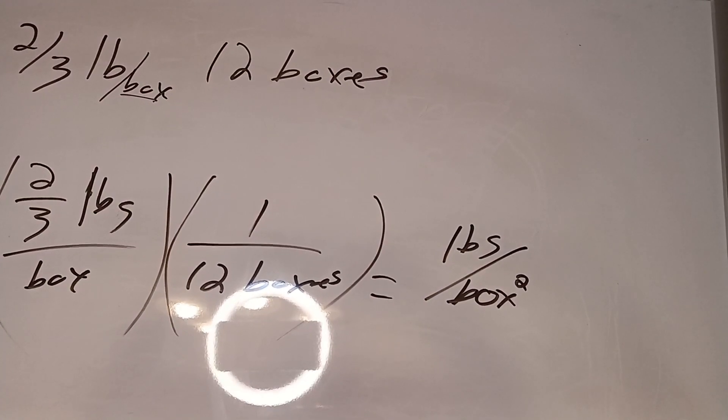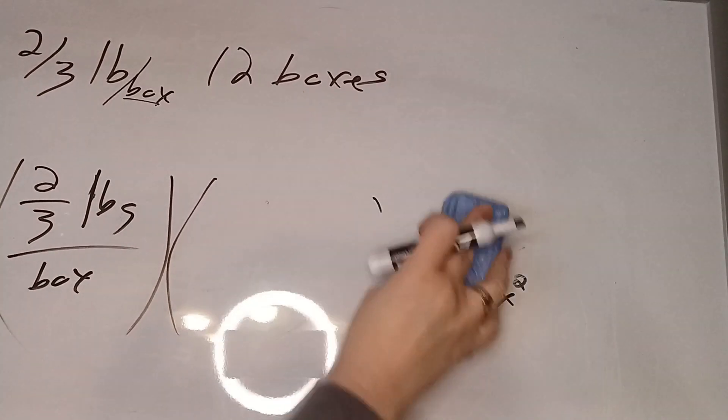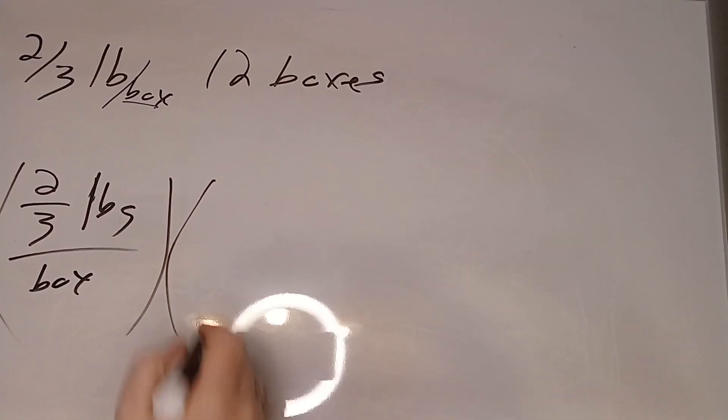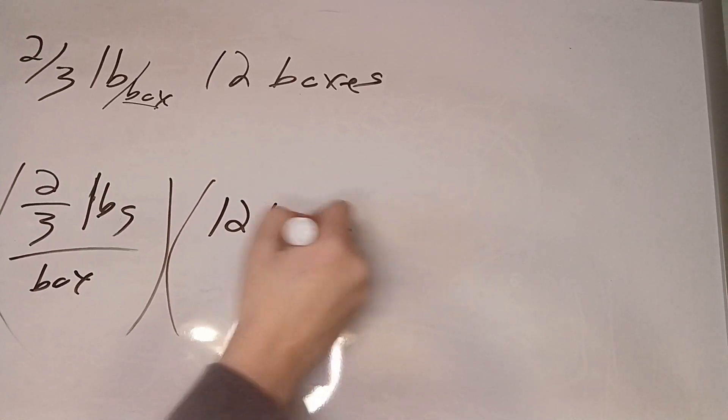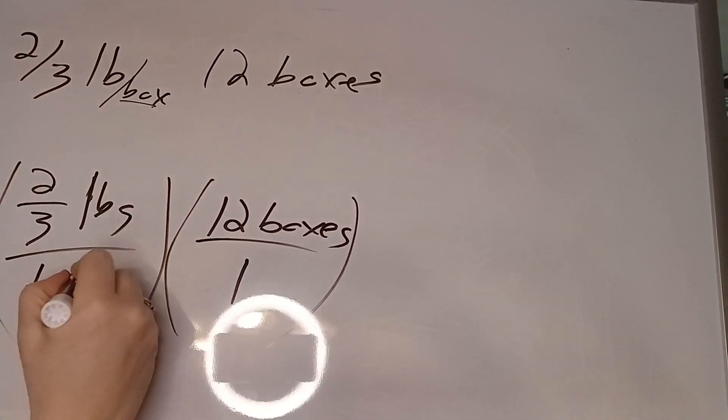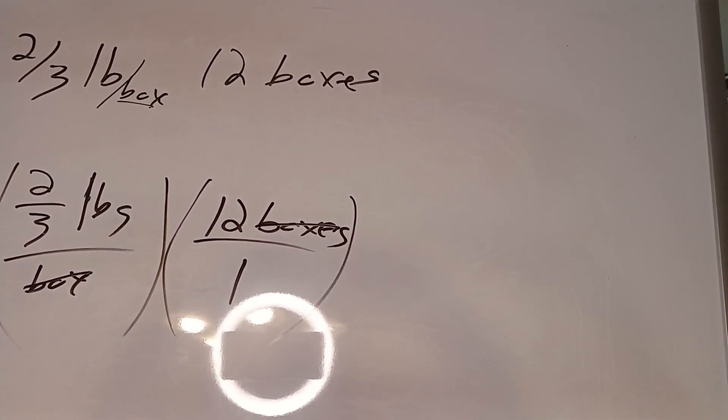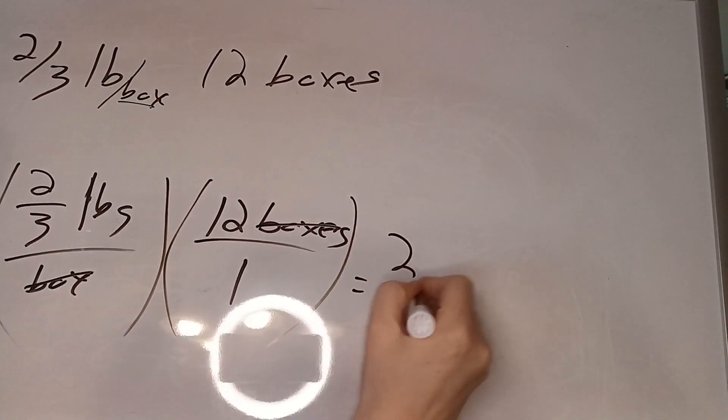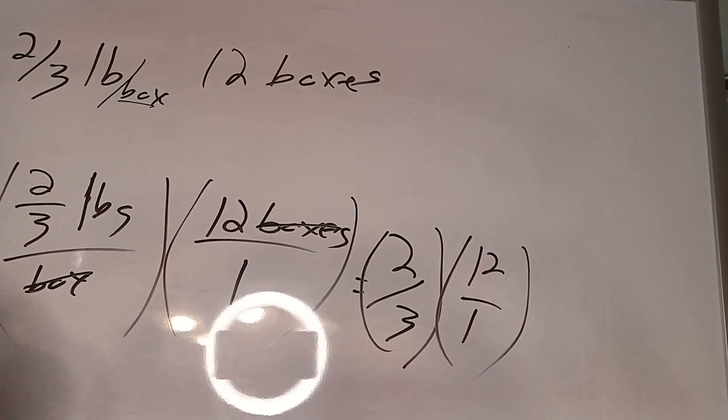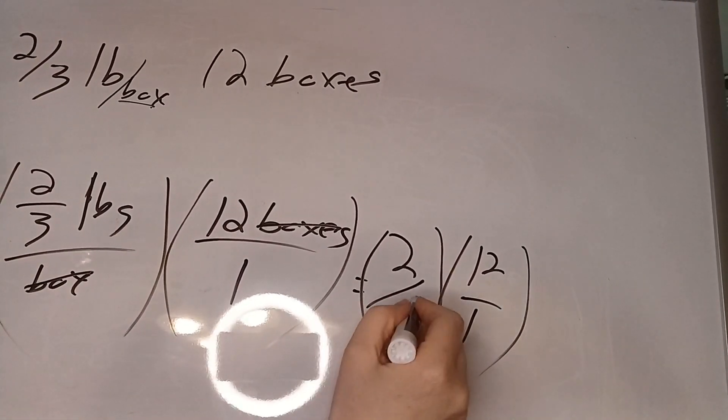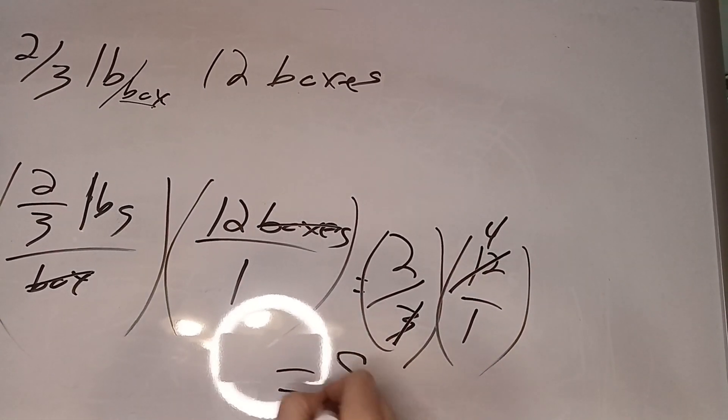All right, so we're back to twelve boxes, so we can cancel out boxes. All right, so now what we have is two over three times twelve over one. All right, we can simplify. We're taking a three out of the bottom, we take a three out of the top, and that gives us eight pounds.